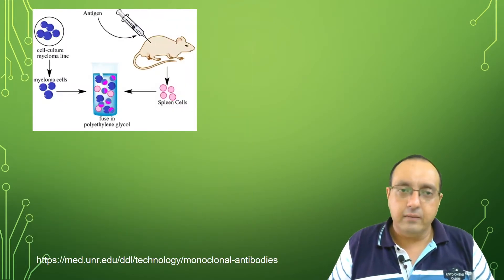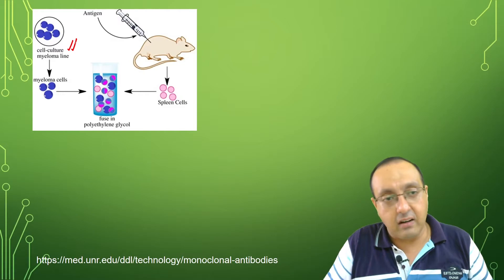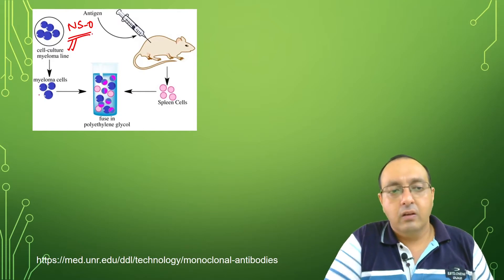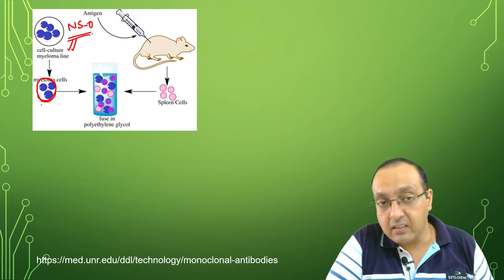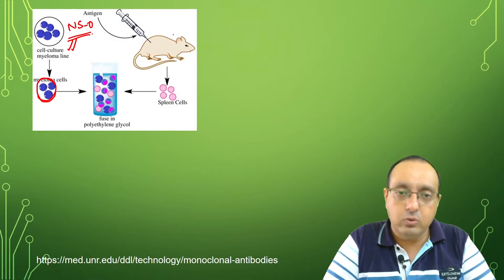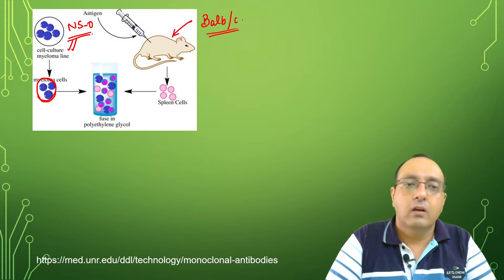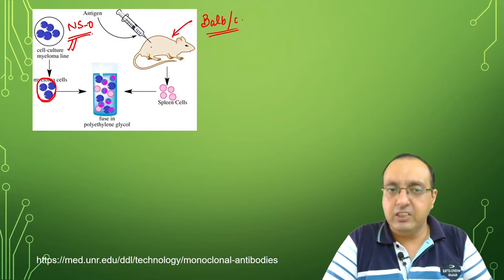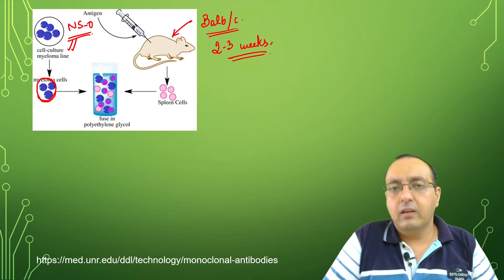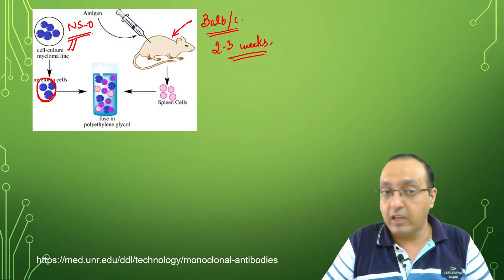Here is the overall idea. We take cell culture myeloma line, a cancer line, usually NS0 line for these studies. We isolate myeloma cells, which are cancerous cells. In parallel, we immunize a mouse, usually BALB/c strain. We immunize the mouse with antigen, usually every two to three weeks, two to three times.